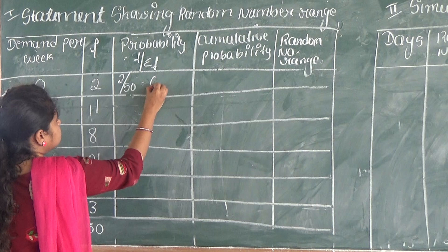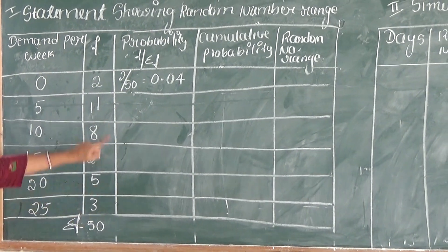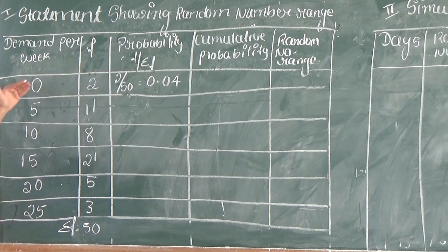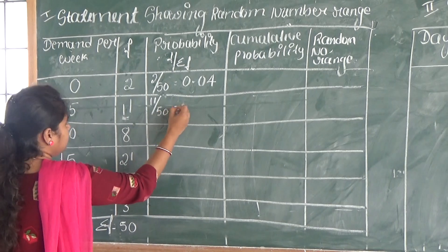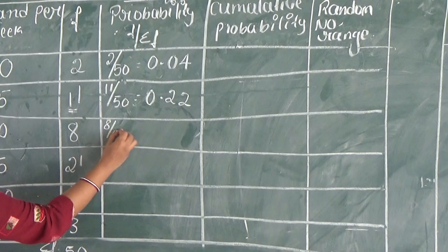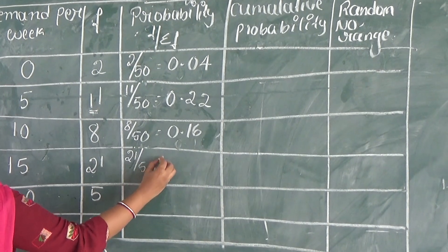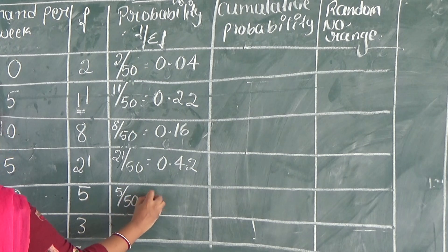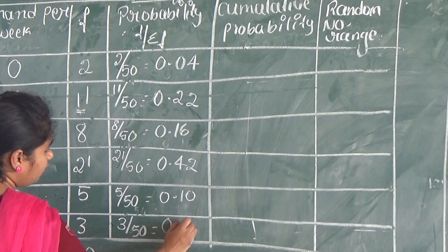2 divided by 50 is 0.04 — the 2 is the favorable outcome and 50 is the total outcome. The formula is frequency divided by sigma f. So: 11 divided by 50 equals 0.22; 8 divided by 50 equals 0.16; 21 divided by 50 equals 0.42; 5 divided by 50 equals 0.10; and 3 divided by 50 equals 0.06.